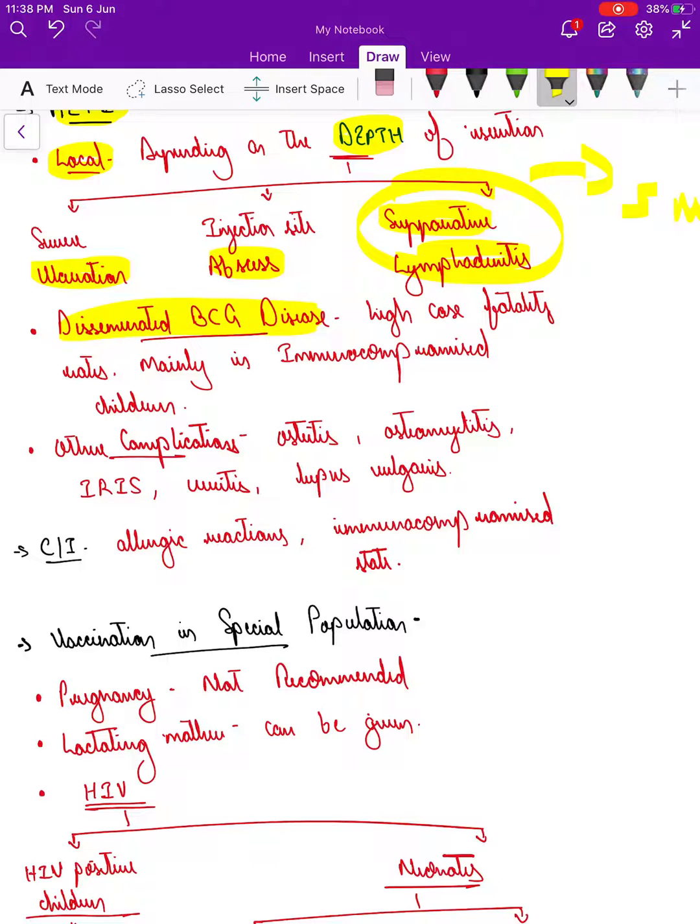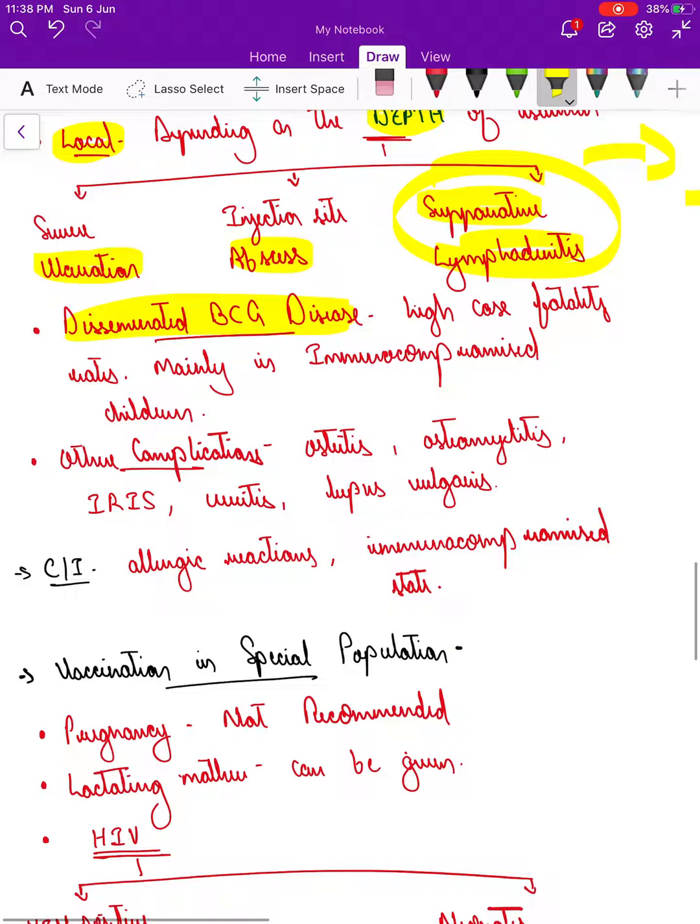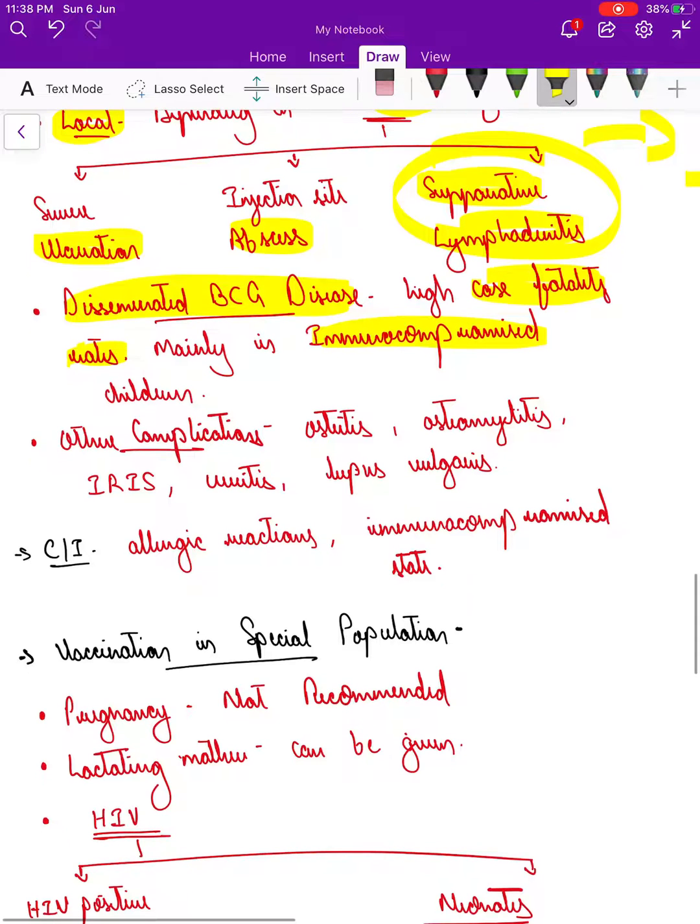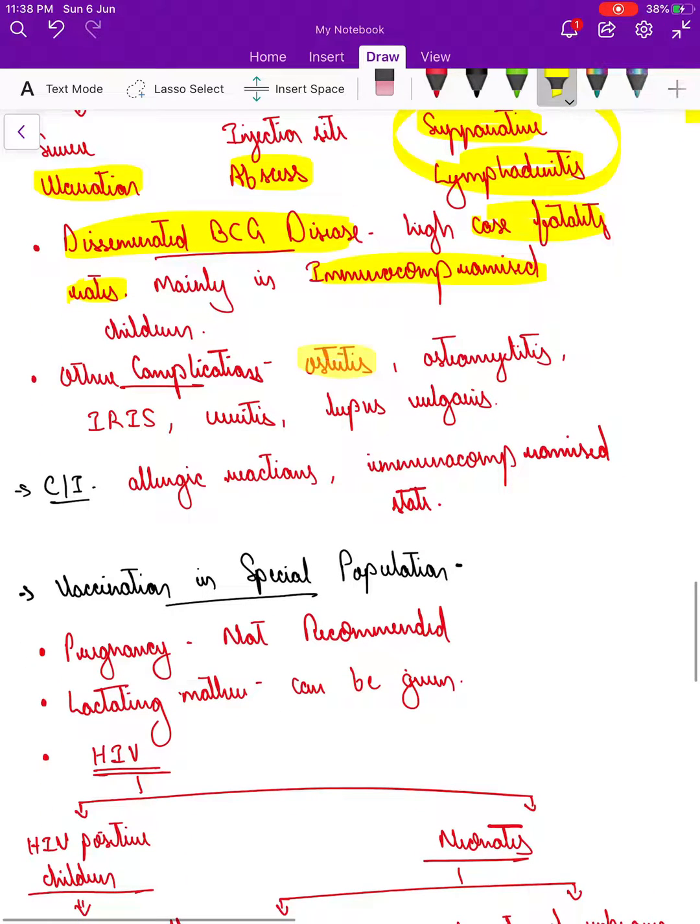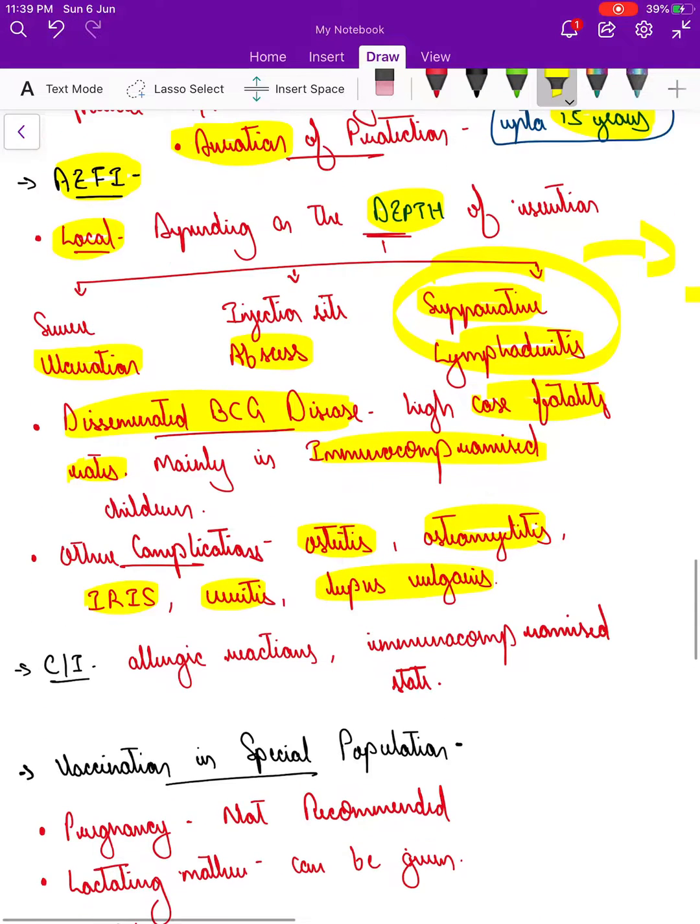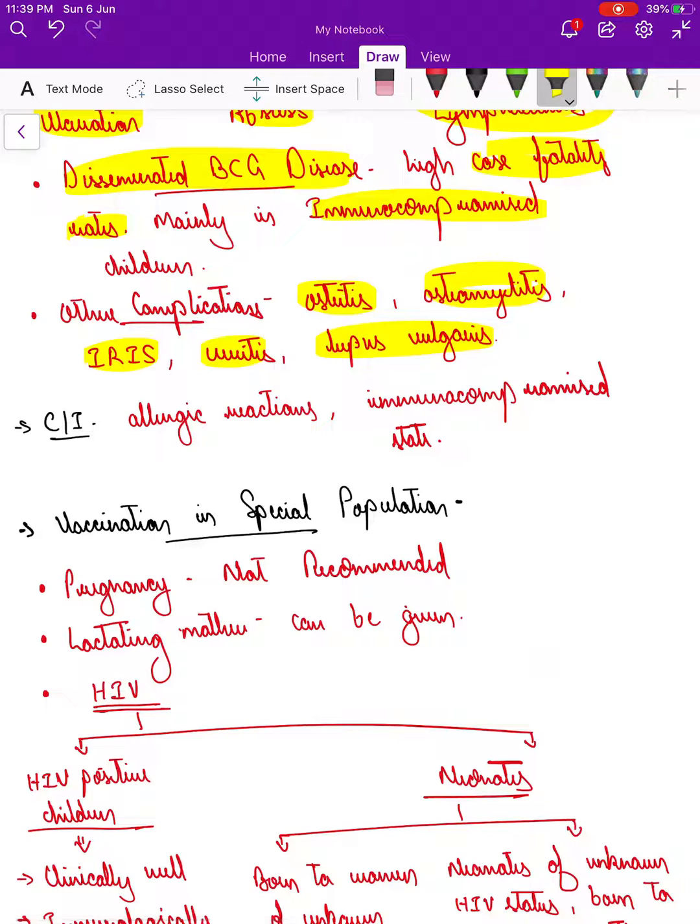What are the systemic complications? One is disseminated BCG disease, which carries high case fatality rates and is usually more common in immunocompromised children. Other complications can be osteitis, osteomyelitis, immune reconstitution inflammatory syndrome in HIV children, uveitis, or lupus vulgaris.